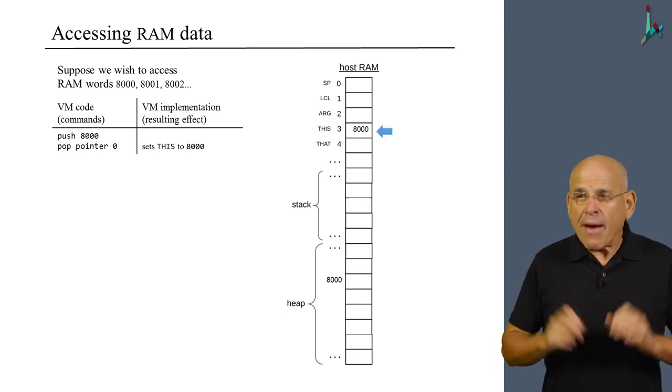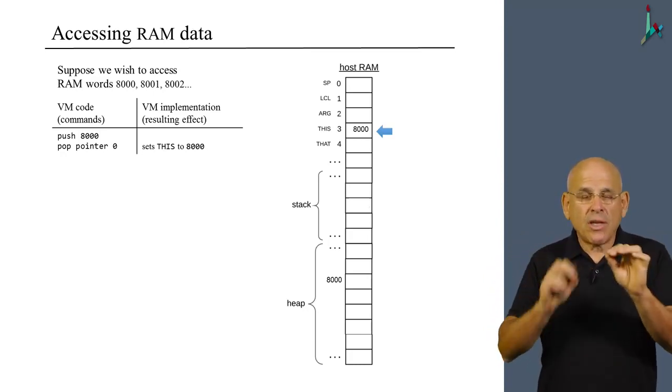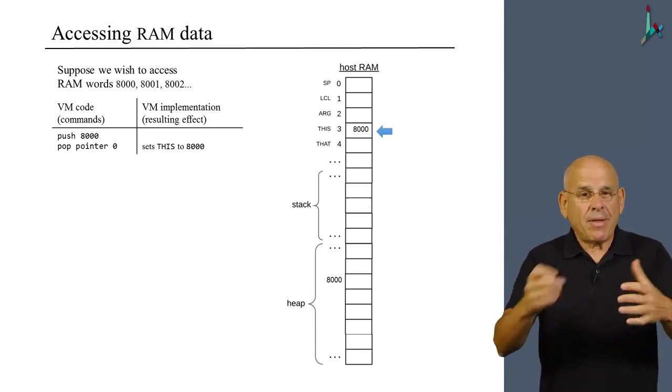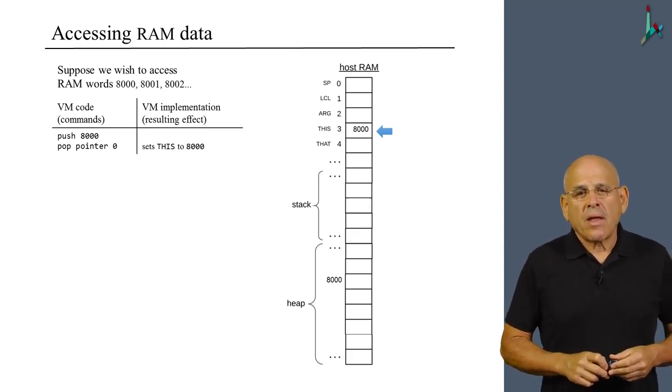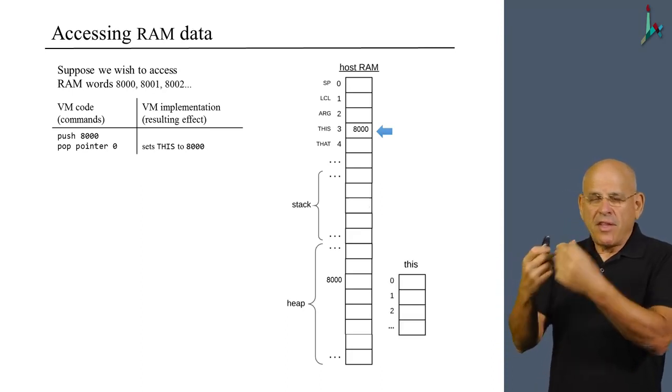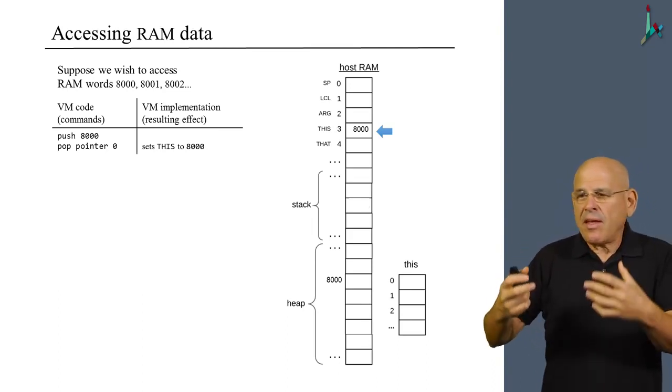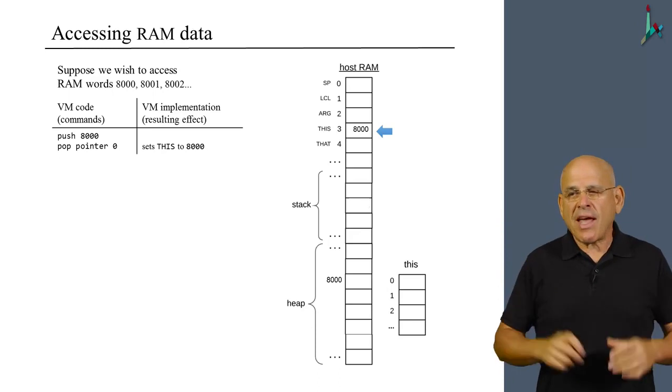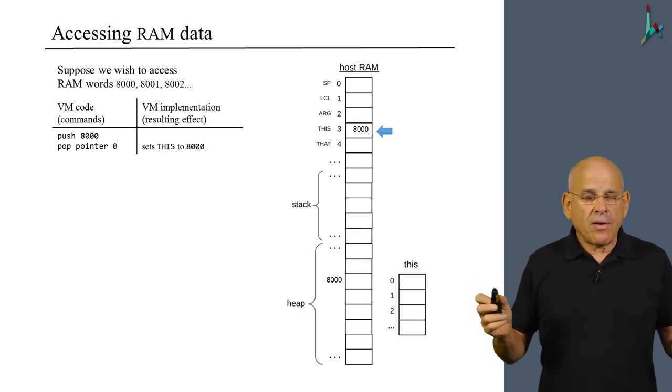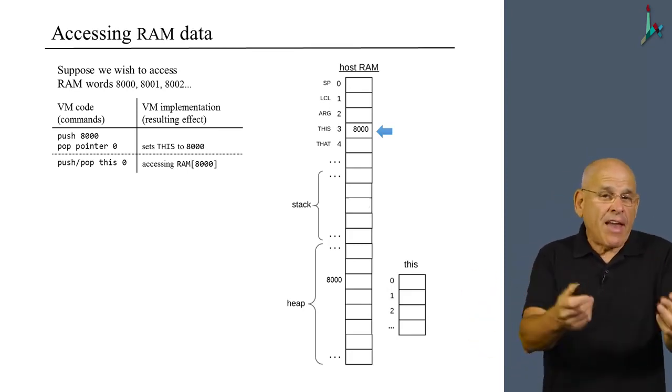So we'll get this effect. Now, by the way, you shouldn't be surprised from what you heard right now, because if you did project 7 and 8, you actually implemented these particular realizations of the VM commands. Moving along, once you set this pointer to a particular address, that this segment can be used as if it mirrors or as if it is anchored exactly on the 8000th address in the RAM.